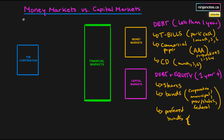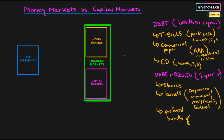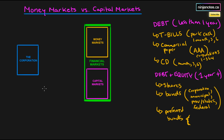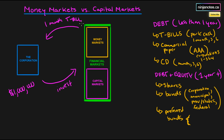Both the capital markets and the money markets exist within the financial markets. For example, if a corporation has $1 million it needs within one month, it can invest that in the money market by purchasing a one-month T-bill. This is very low risk, keeps the money liquid, and allows the corporation to meet any short-term obligations or fund a capital project when the T-bill matures — returning the principal plus a little interest.